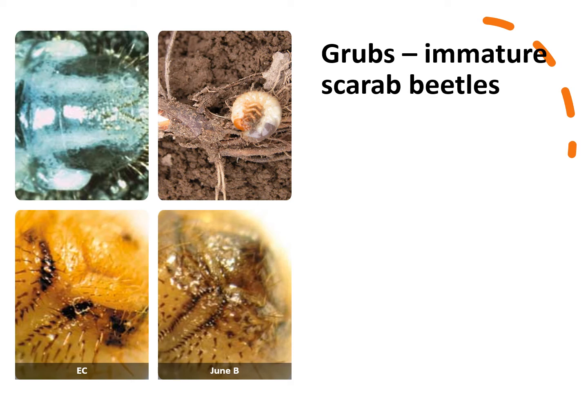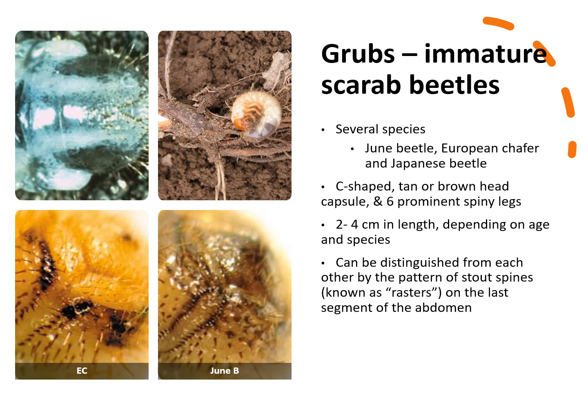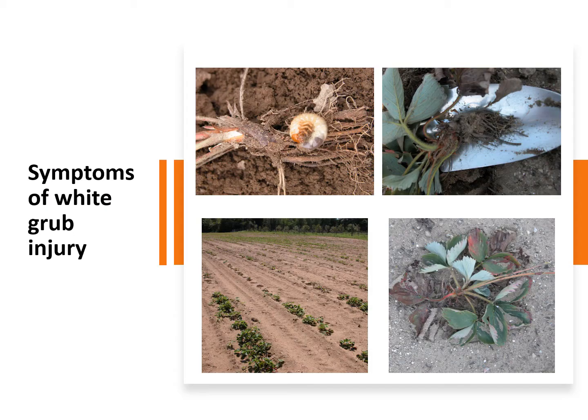Both root weevils and white grubs are insects that can cause damage to strawberry roots. White grubs are the immature stage of scarab beetles, which include June beetles, European chafers, and Japanese beetles. Larvae are found in the soil, are C-shaped, have a brown head capsule and six prominent spiky legs. They range from 2 to 4 centimeters depending on the species, and can be distinguished from each other by the rasters on the last segment of the abdomen. June beetle larvae have two rows of spines that are nearly parallel, whereas Japanese beetles have spines in a V pattern.